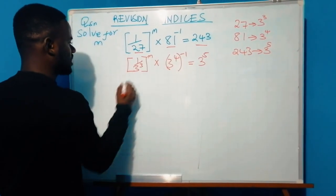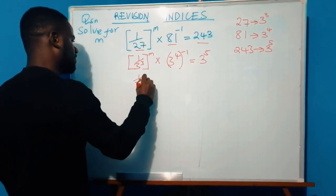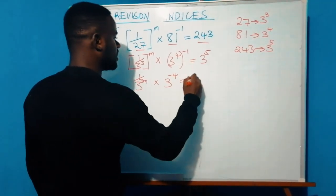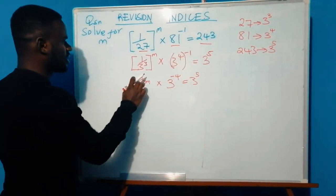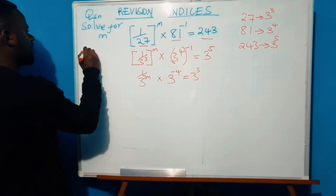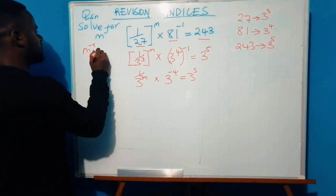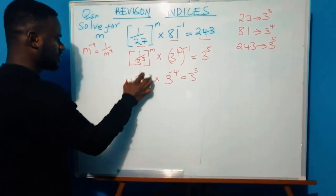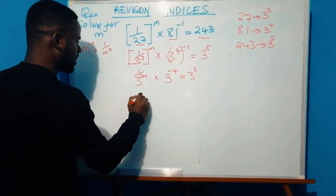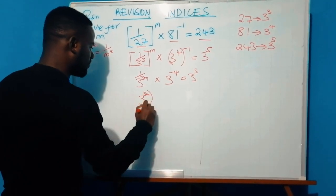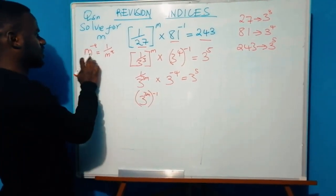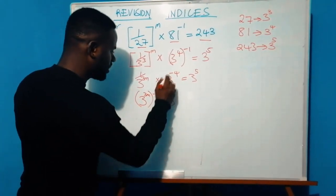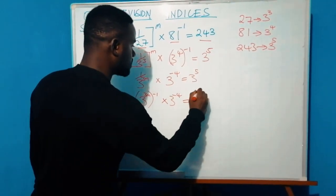Opening up the bracket on the left side gives: one over 3 raised to power 3m, times 3 raised to power negative 4, equivalent to 3 raised to power 5. Now, one over 3 raised to power 3m is the same as 3 raised to power 3m all raised to power negative 1, so it becomes 3 raised to power negative 3m. We still have times 3 raised to power negative 4, equivalent to 3 raised to power 5.